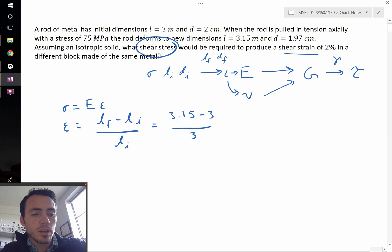So that is just 0.05. That's what we're going to call epsilon_y. That's our longitudinal strain. That's in the Y direction. That's how I'm defining that.